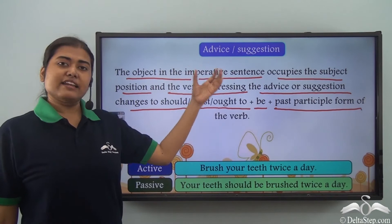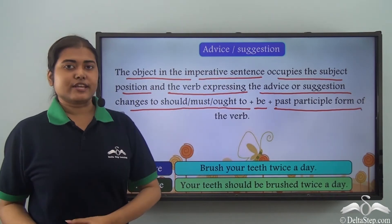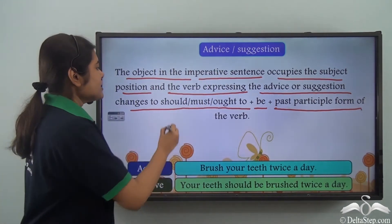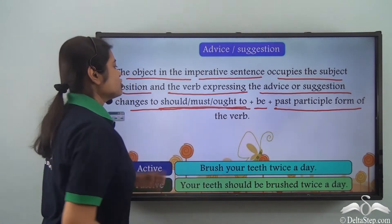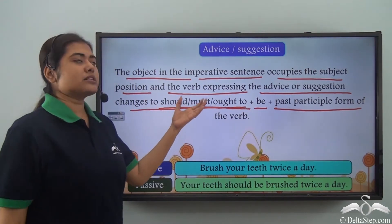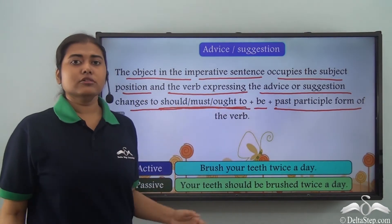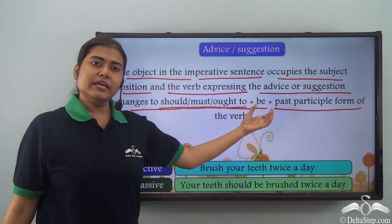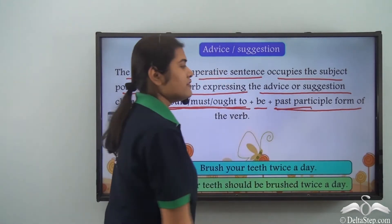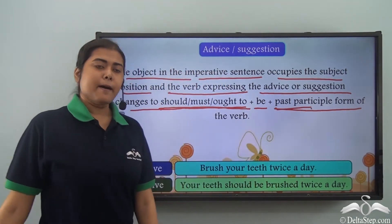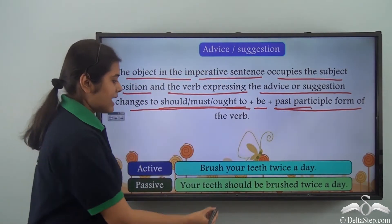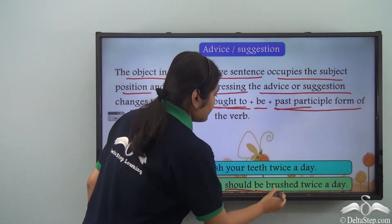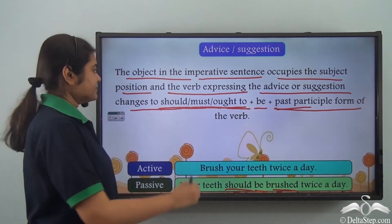The verb form for advice or suggestion becomes: should / must / ought to + be + past participle form of the verb. So whenever you have advice or suggestion, you can add these modals — should, must, or ought to. Then we have the verb 'be' and the past participle form of the main verb, as in this case: 'should be brushed.'